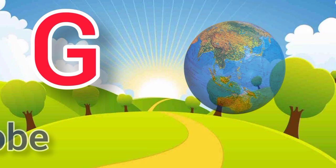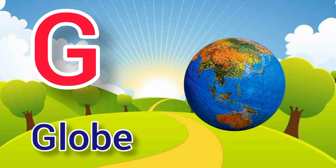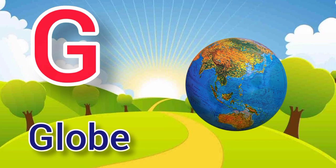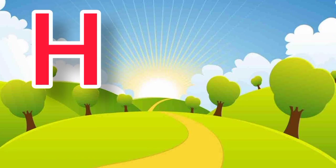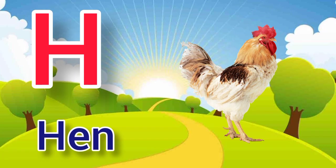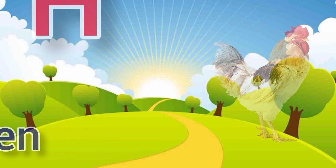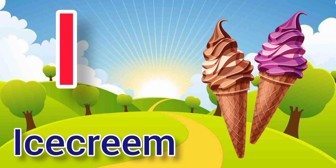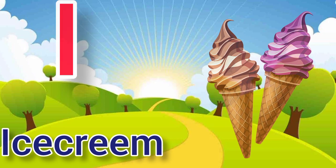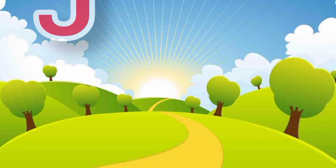G. G for globe, globe means manchit. H. H for hen, hen means murgi. I. I for ice cream, ice cream means ice cream.